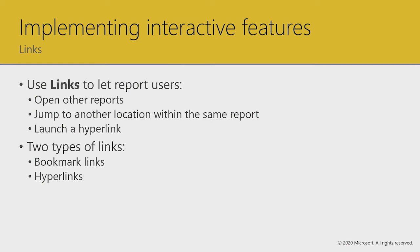Links can be added to let report users open other reports, jump to other locations within the same report, or simply launch a hyperlink — maybe the company's intranet page. More importantly, you can navigate to another paginated report or a Power BI report using URL parameters. Types of links include bookmark links to jump within the same report and hyperlinks to go anywhere else. URL parameters will be introduced in module 7.